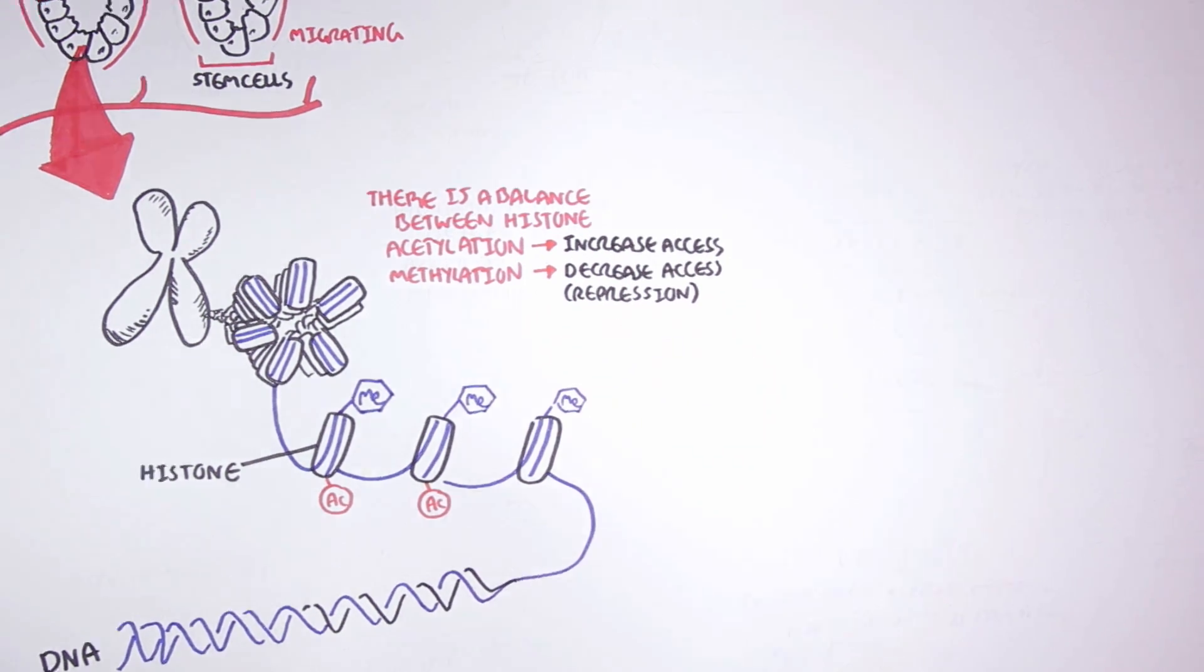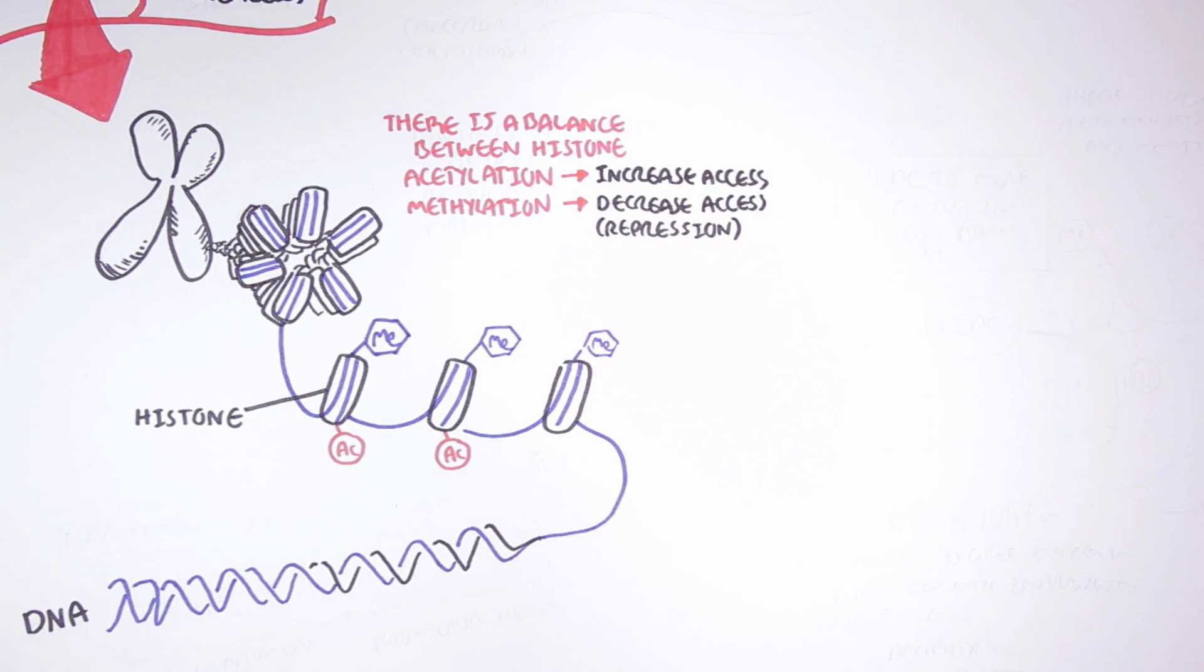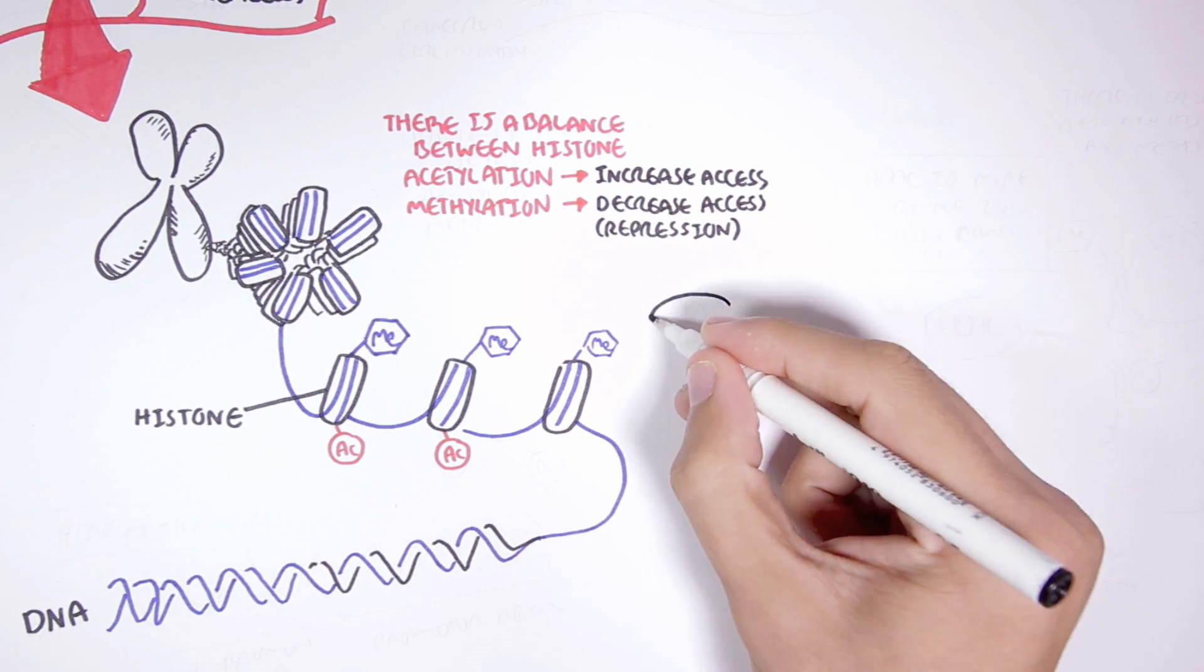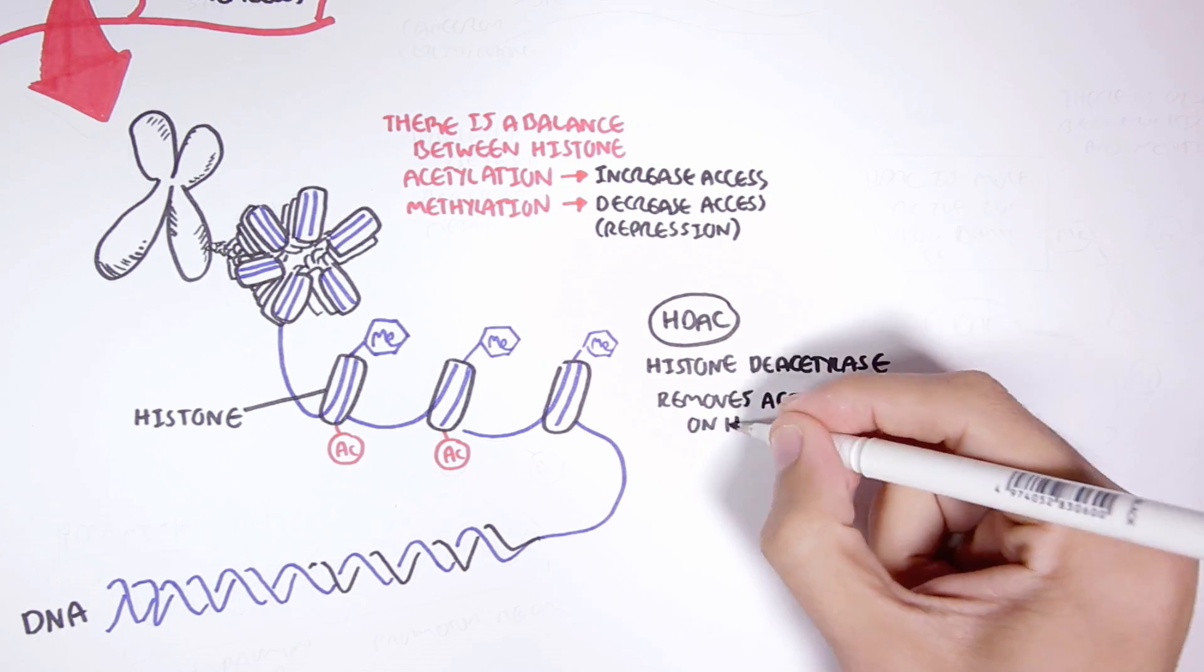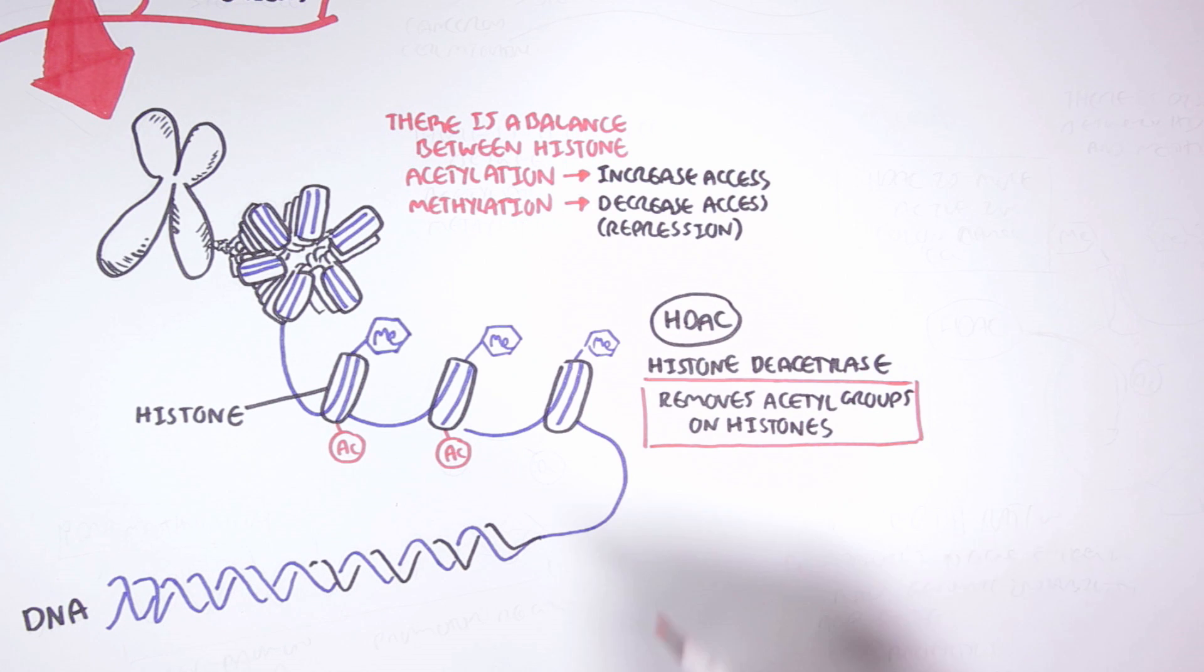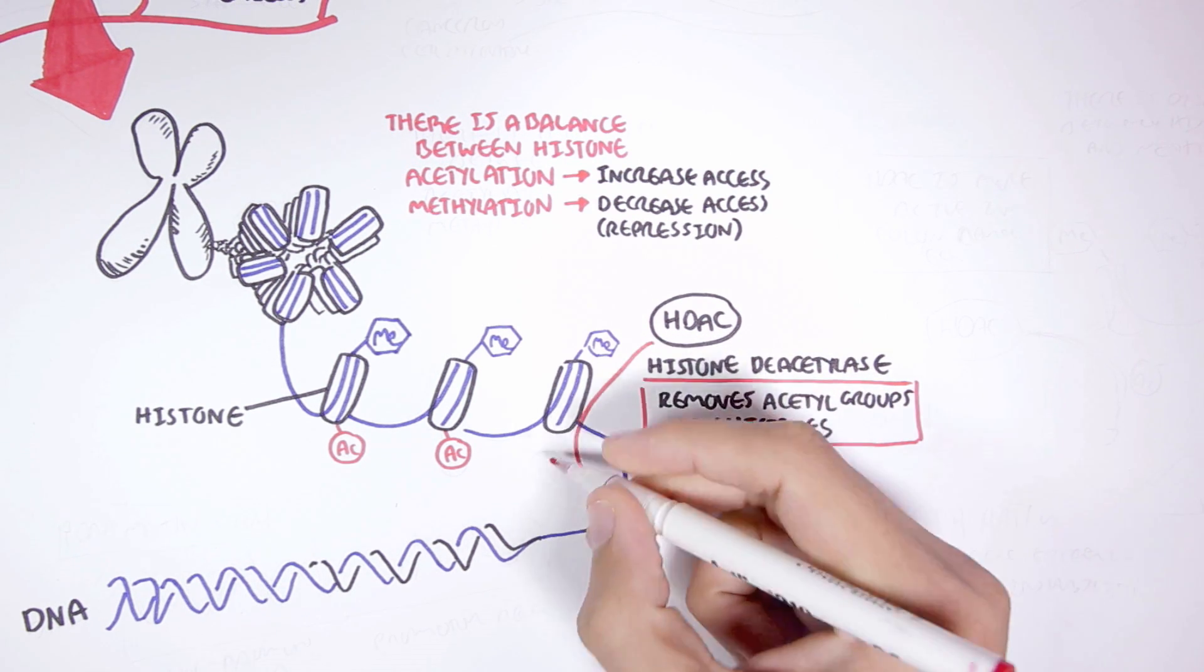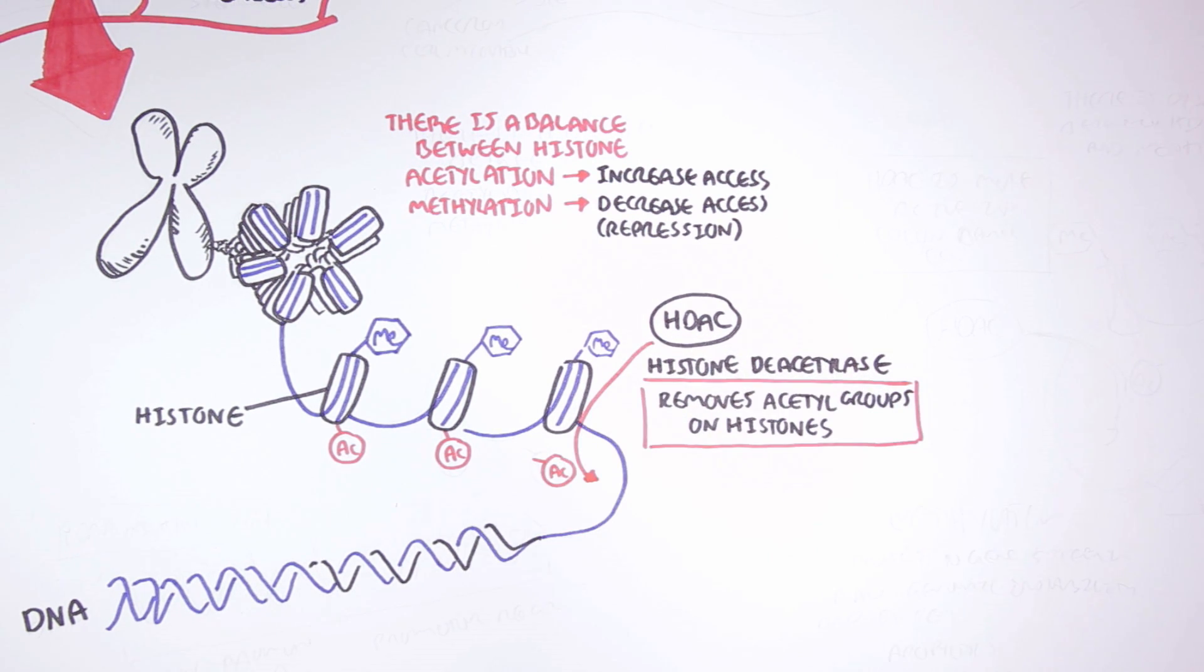Now an important enzyme to know is HDAC, which is histone deacetylase. This enzyme essentially removes an acetyl group from the histone. So here the enzyme is removing the acetyl group from this histone, and HDAC is an important enzyme in decreasing access for transcription factors.